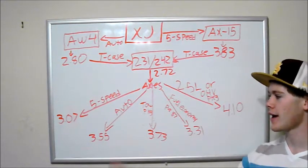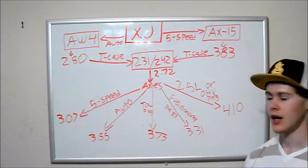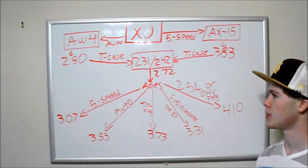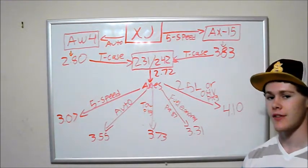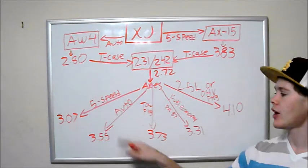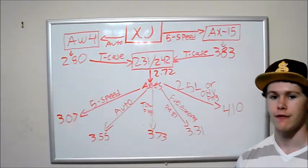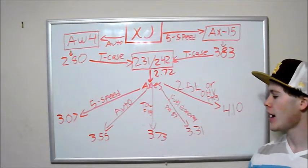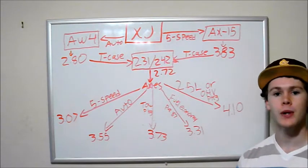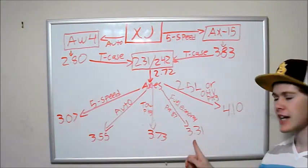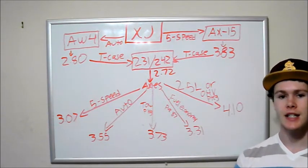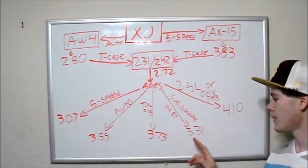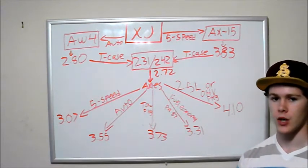With the axles, this is where we have the widest range of ratios, so this is where you're really going to have to pay attention with what you have. If you've got a 5 speed, most likely you're going to have 3.07 gear ratio. If you have an automatic, you're going to have a 3.55 ratio. If you have a tow package, you're going to have a 3.73 ratio. This one's kind of a rare one. It's the fuel economy package on pre-1987 Cherokees. You might have the 3.31 ratio.